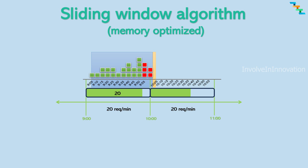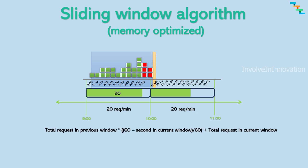When the first request comes in the current window, the request count in the current window is added with the previous sliding window percentage. We will see this with an example.